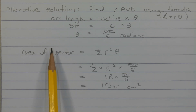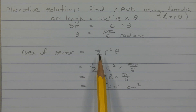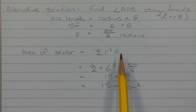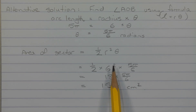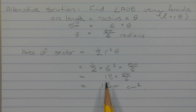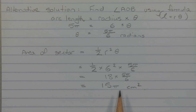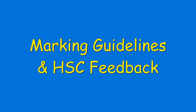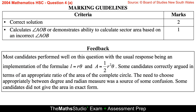The area of the sector is given by the formula half times the radius squared times theta. So that's half times 6 squared times 5 pi over 6, which equals 18 times 5 pi over 6, which equals 15 pi square centimetres.